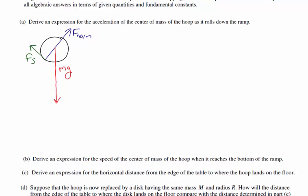The first thing we're asked is to derive an expression for the acceleration of the center of mass of the hoop as it rolls down the ramp. I've drawn the force diagram, showing the forces acting at the point of application. The force of gravity acts right at the center of mass of the hoop, and the normal force and force of static friction act right at the point of contact between the hoop and the ramp.